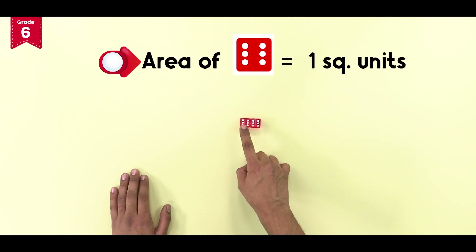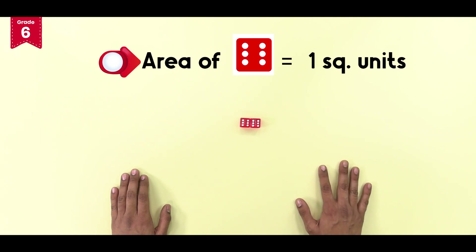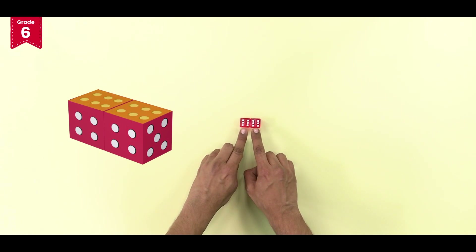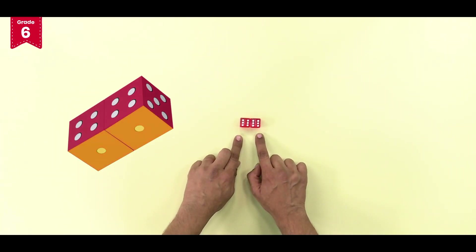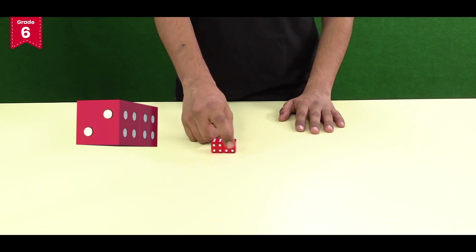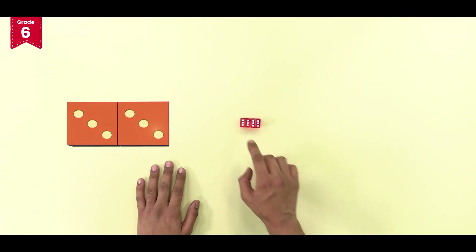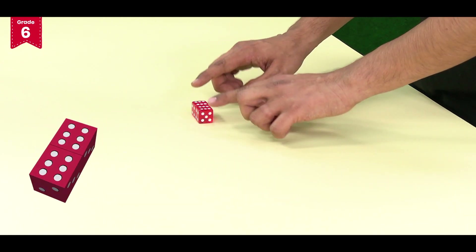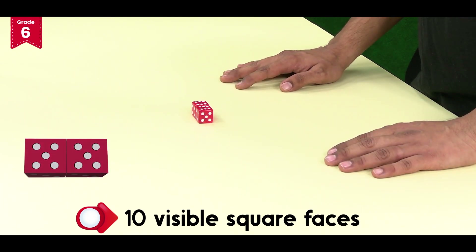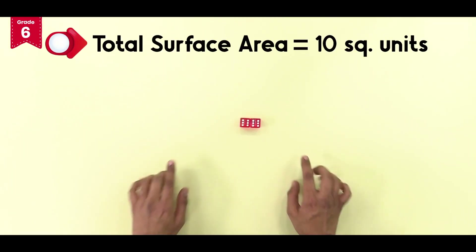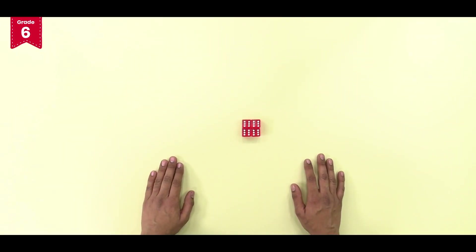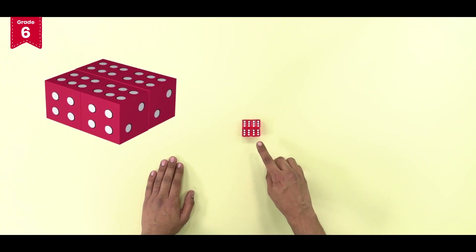Taking the area of one square face equal to one square unit: this shape has two faces on the top and two faces on the bottom. We can see two open faces on the sides, two open faces in the front, and two in the back. There are a total of ten visible or open faces in this shape, so the total surface area of this cuboid is equal to ten square units.